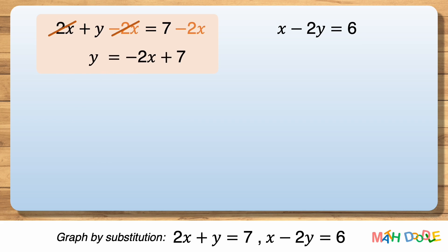Now, this tells us that y is equal to minus 2x plus 7. So, let's substitute minus 2x plus 7 for y in the other equation.